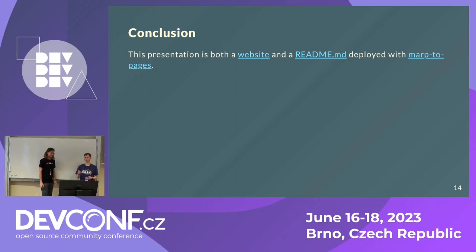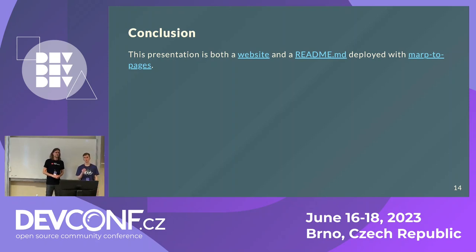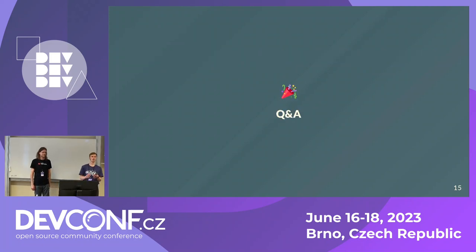To live up to this standard, we developed this presentation using the tool MARP and the MARP-to-pages GitHub Action, which converts a Markdown file into a presentation and then publishes it to GitHub Pages using GitHub Actions. Let's proceed to the Q&A section if anyone has questions.